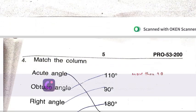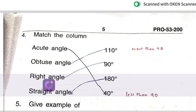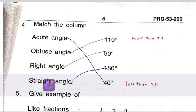Shade 1 fourth. Match the column: acute angle is 40 degrees, less than 90. Obtuse is more than 90. Right is 90 and straight angle is 180.